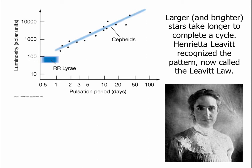Back when we talked about the Harvard Women Computers we talked about Henrietta Leavitt, who worked on variable stars. Henrietta Leavitt was the woman who discovered these Cepheid variables and a related type of variable star called an RR Lyrae star. What she noticed is that stars that were intrinsically brighter — stars that were more luminous — took longer to complete a cycle, in part because they're just larger stars and something bigger is going to take longer to go through a pulsation than something smaller.